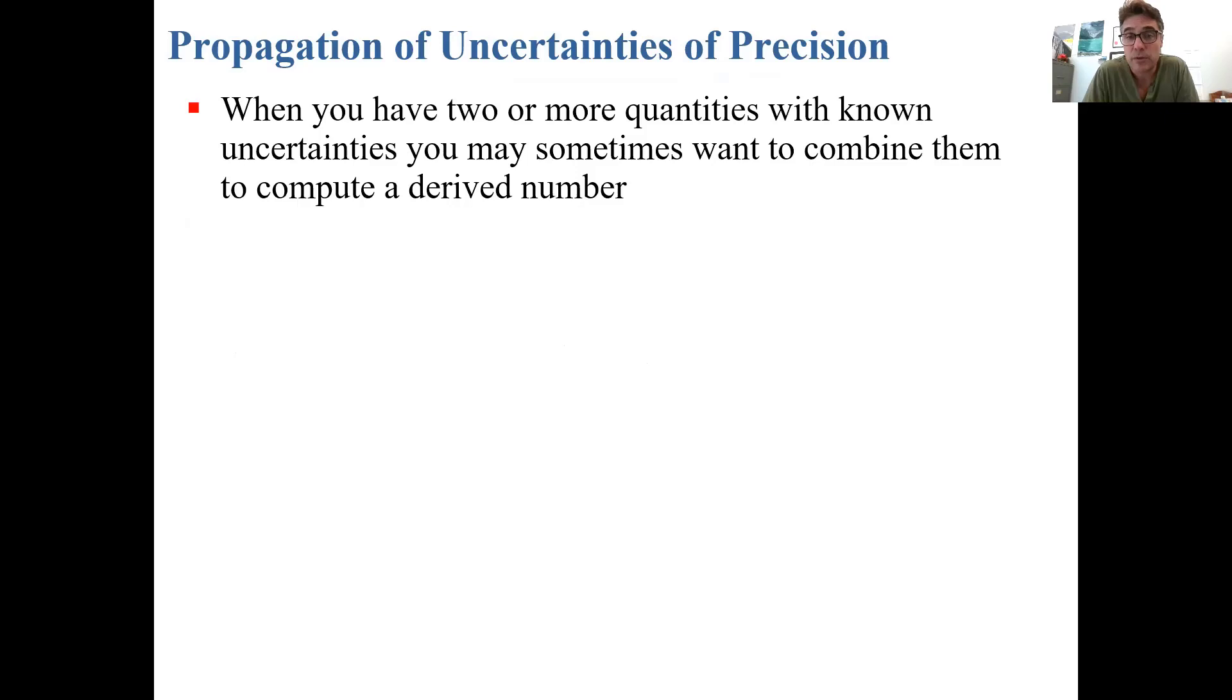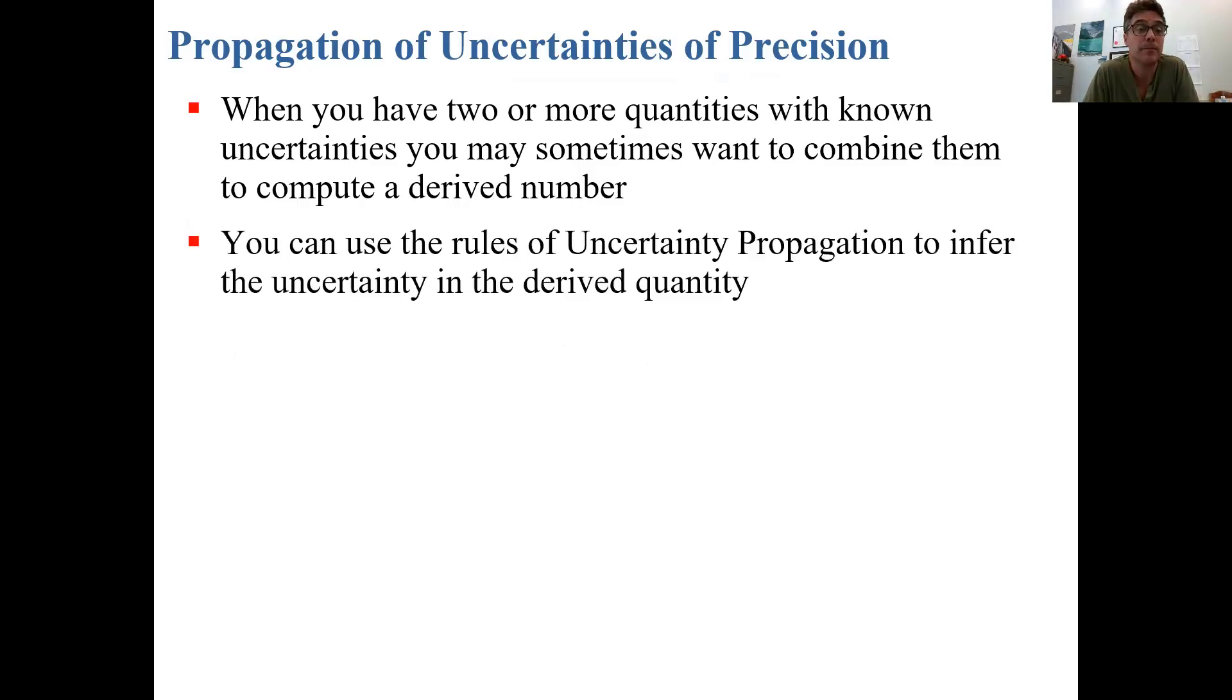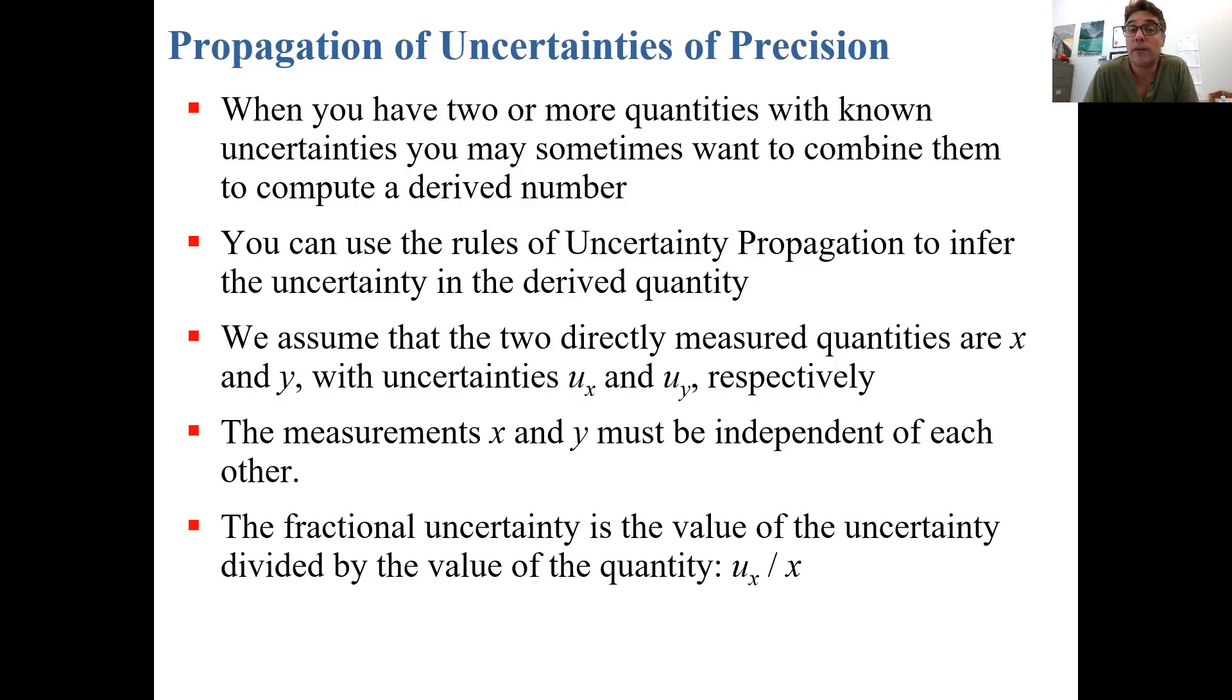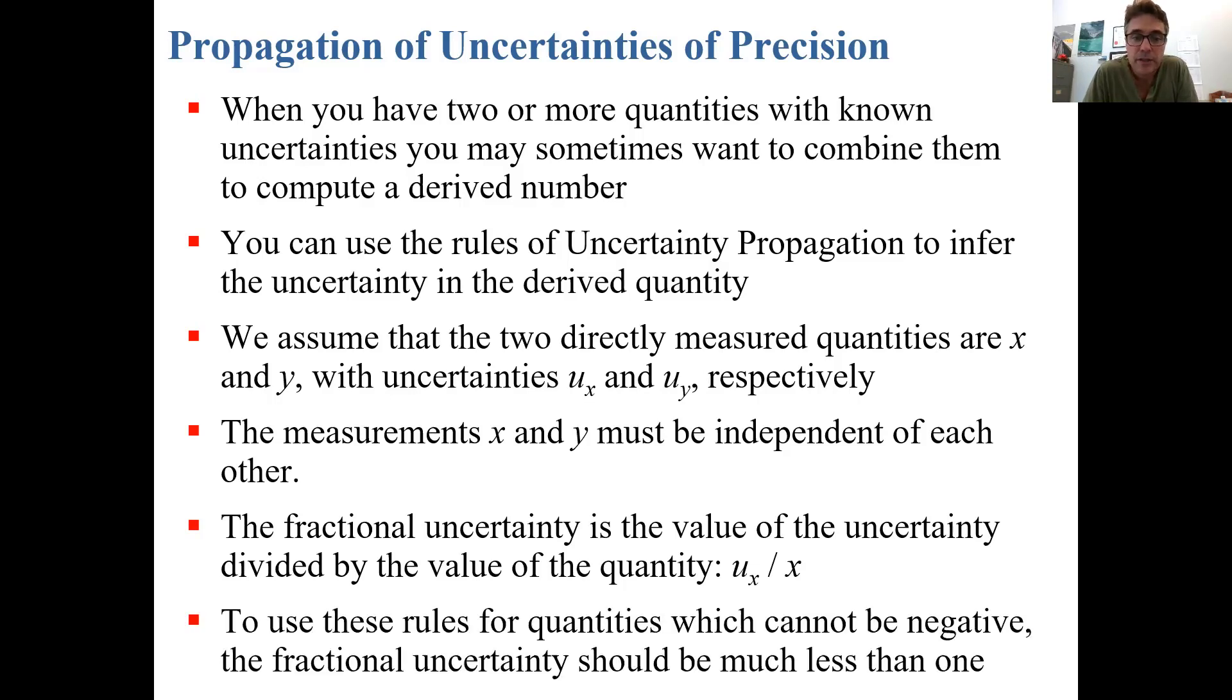Now let's talk about propagation of uncertainties. When you have two or more quantities with known uncertainties, you may sometimes want to combine them to compute a derived number. You can use the rules of uncertainty propagation to infer the uncertainty in the derived quantity. In these equations, we're always going to assume that there's two directly measured quantities, x and y, and they have uncertainties. U sub x is the uncertainty in x and U sub y is the uncertainty in y. These measurements are totally independent of each other. There's something called the fractional uncertainty, which is the uncertainty of a number divided by the number itself. The fractional uncertainty of x is U sub x divided by x. To use these rules for quantities which cannot be negative, the fractional uncertainty should be much less than one.